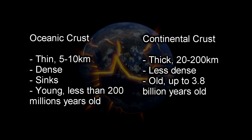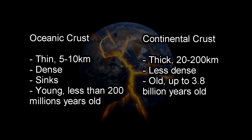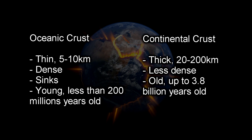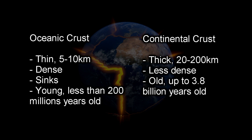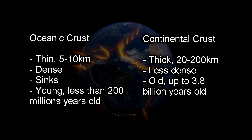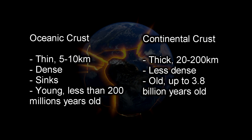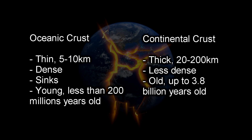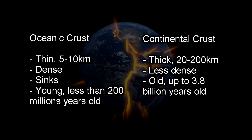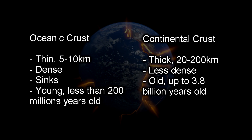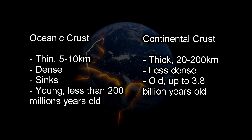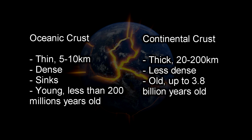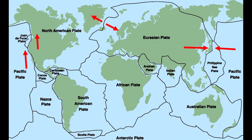The oceanic crust is 5 to 10 kilometres whereas the continental is 20 to 200. The main thing to remember is oceanic is dense, so when continental plates meet it will be sinking, whereas the continental crust is less dense so it won't be forced down and we won't see subduction.